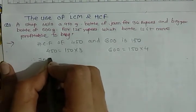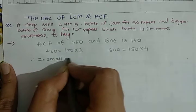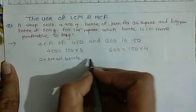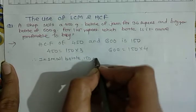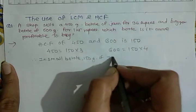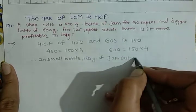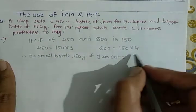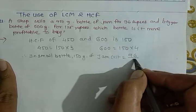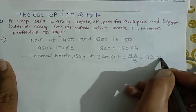Therefore, 150 gram of jam in small bottle costs 96 divided by 3, that is 32 rupees.